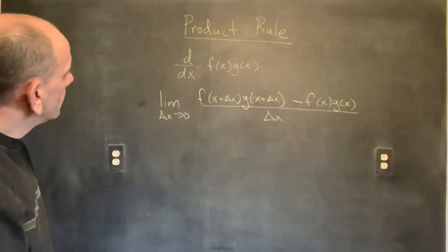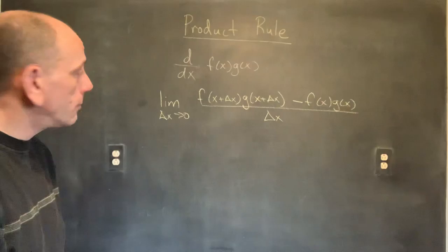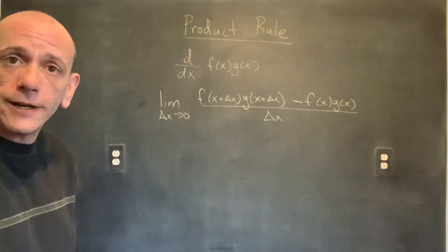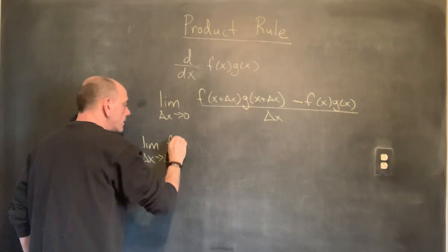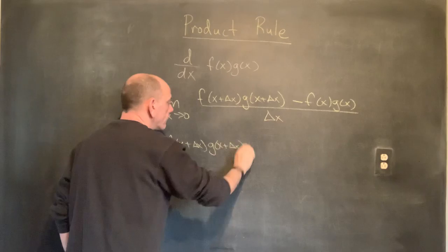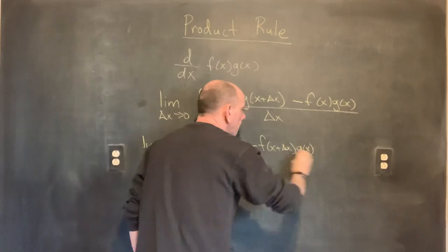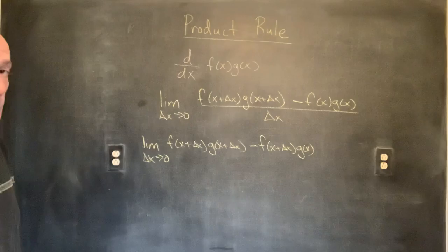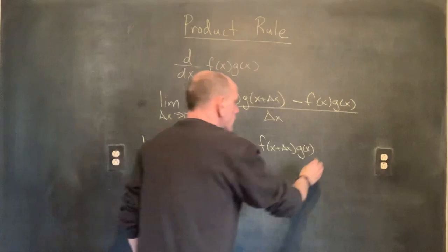At this point we're stuck. Some smart person stared at this for a very long time and figured out that we can bring our magic tool of adding zero to bear on this problem. We can always add zero or multiply by one. So we have a very clever form of zero: I've got f(x + Δx)·g(x + Δx) minus f(x + Δx)·g(x). But now I've changed from the previous expression, so in order to compensate for that, I've got to add that right back — I'm essentially just adding zero.